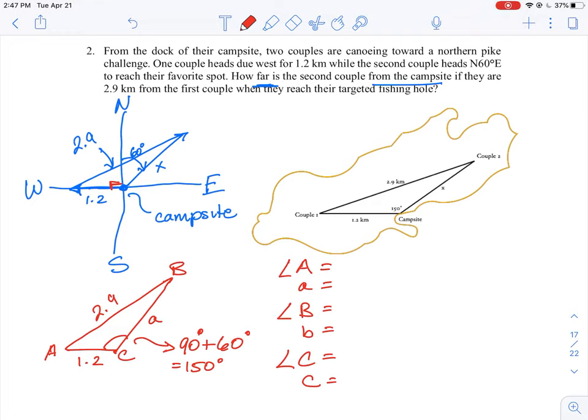So if we look here, we don't know what angle A is, so we can't get a value for that. And we actually don't know what side A is either, little a. So we have to leave that blank.